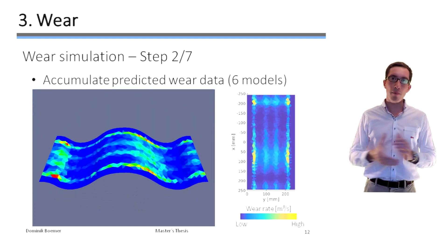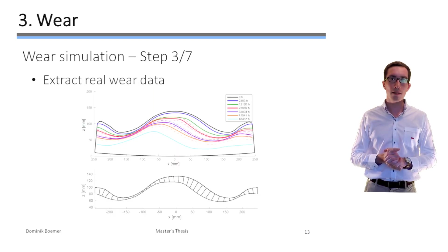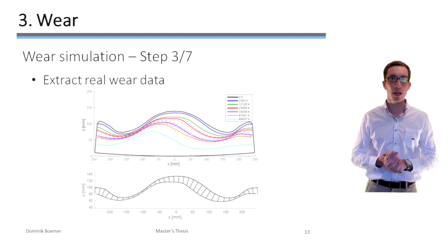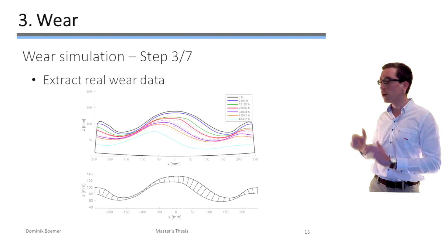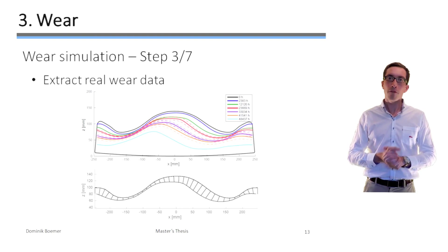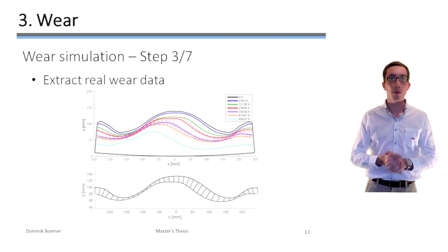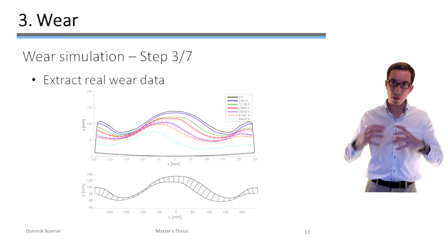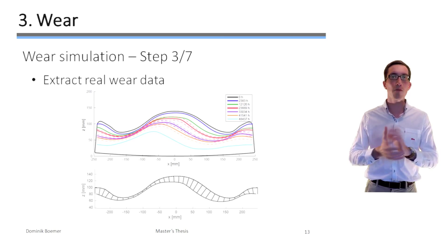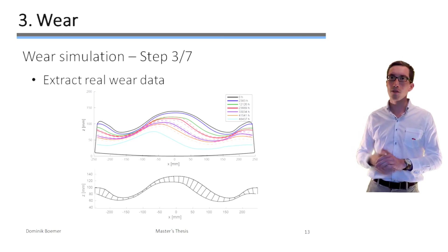At the same time, we have extracted the real wear data from the wear profiles by projecting the initial mesh of the plate onto the mesh of a later wear profile. For this reason, we know the real wear rates. This means the volume loss per time of each facet of the initial mesh. So this is just shown here.